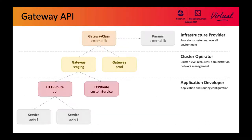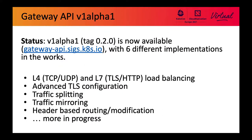This slide shows a sketch of how the API objects relate in the Gateway API. The infrastructure provider creates gateway class resources determining what kind of gateways can be provisioned. The cluster operator and/or application developer creates gateway objects representing specific instances of load balancers. Finally, application developers write routes that model their applications. Routes are not limited to HTTP and L7 but can also be L4, and the route object type is protocol-specific, allowing room for extension to custom protocol types. We're excited to announce that V1 Alpha 1 has been cut, with at least six different implementations in the works.